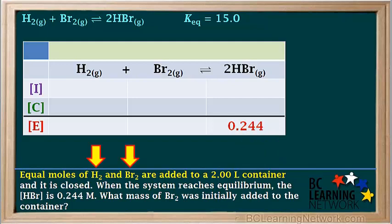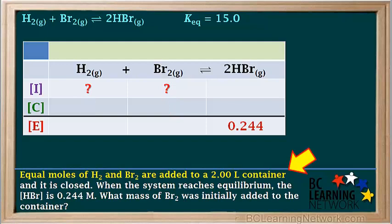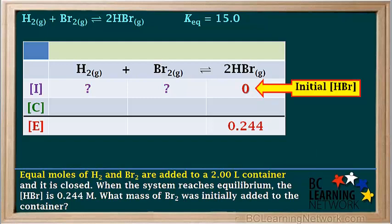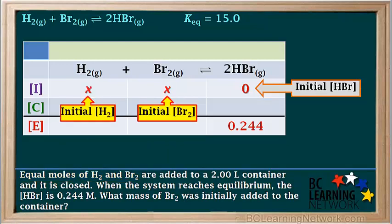The question tells us that equal moles of H2 and Br2 are added to the container, but we are not given any values for the initial concentrations or moles. It only gives us the concentration of HBr at equilibrium. It doesn't say anything about adding any HBr initially. Therefore, the initial concentration of HBr is 0. Because the moles of H2 and Br2 are equal, their initial concentrations will also be equal. We'll let X represent the initial concentration of both H2 and Br2. ICE tables usually deal with concentrations, not with moles or grams, so we'll put X's in for the initial concentrations of H2 and Br2. We'll eventually find the value for X, and then in a later step determine the initial moles and initial mass of Br2.